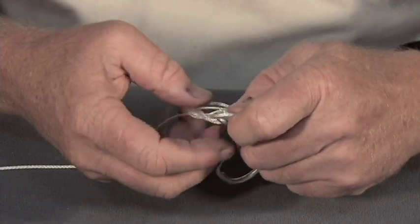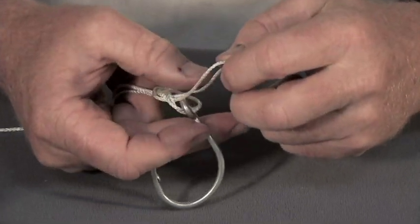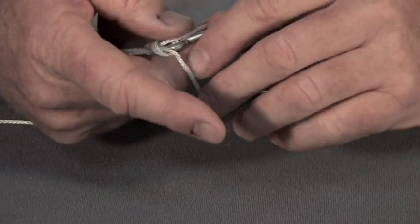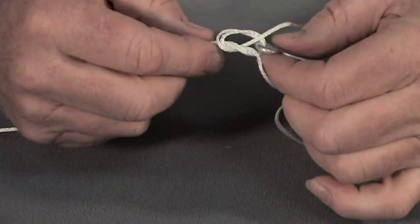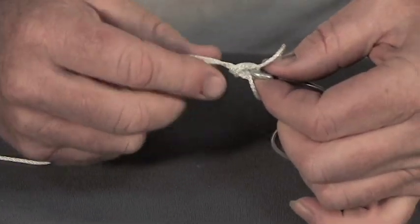Then take the end of that loop and put it over your hook. And then tighten things up.